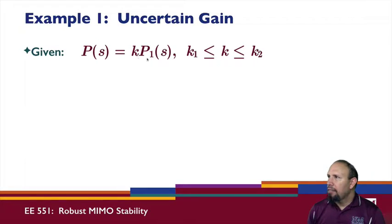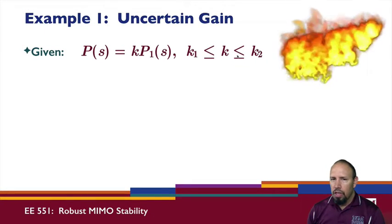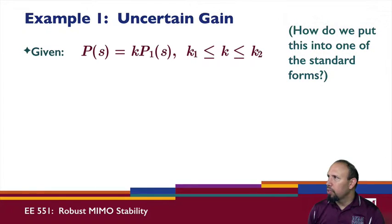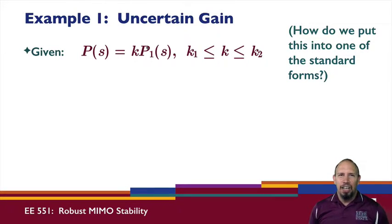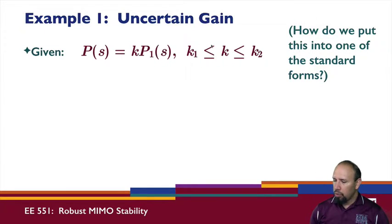I have a plant given by k times some transfer function P1(s), where k is unknown but bounded — it's between the values k1 and k2. The question is how do we put this into one of the standard forms. Since k is multiplying the transfer function, that gives us the hint that we'll be dealing with a multiplicative type uncertainty.